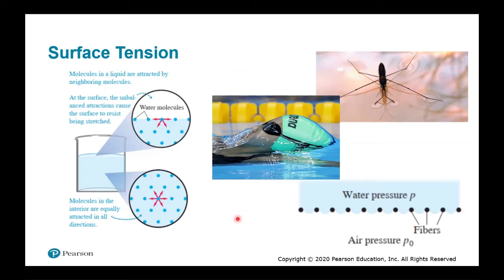When you wash clothes with hot soapy water, the goal is to increase the surface area of water that gets into the fabric fibers. Surface tension makes this difficult, so heating the water and adding a surfactant (present in soap) both help in reducing the surface tension.